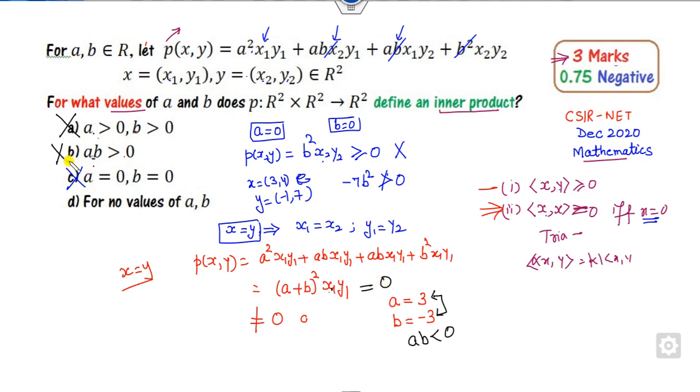The right answer is there are no values of a and b for which this forms an inner product. So the right answer is D. That's a simple way—you have to remember the properties and discard the options based on that.